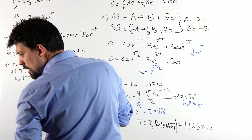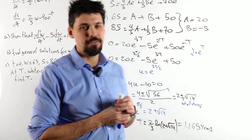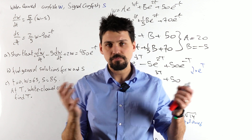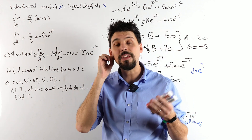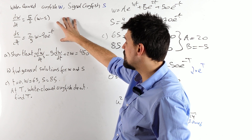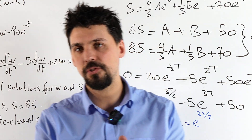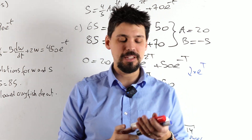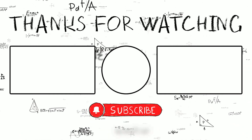These values were in years. So following this model, the poor white-clawed crayfish will die out in approximately 1.165 years — because the signal crayfish are just eating away at them like nobody's business. Hope you found that interesting — a straightforward system of linear first-order differential equations. Just do the algebra carefully. For more videos like this, don't forget to subscribe. I'm Nick, see you next time.